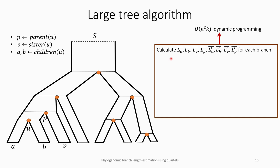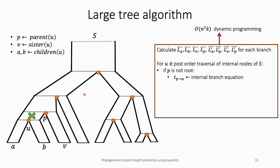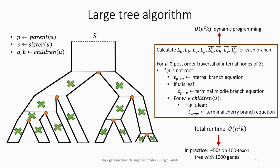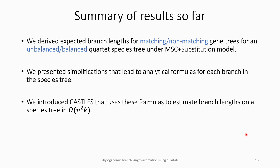The CASEL algorithm for large trees works as follows. We first calculate average lengths for each branch using dynamic programming. Then we do a post-order traversal over all internal nodes of the species tree, and for each node we set the length of the branch above it using the internal branch equation. If a node is sister to a leaf, we also set the sister branch length using the middle terminal branch equation. If the node is parent to a cherry, we set the two branches below it using terminal cherry branch equations. The overall runtime is O(n^2 * k), and in practice it takes about 50 seconds to estimate branch lengths on a 100-taxon species tree with 1,000 genes on average.